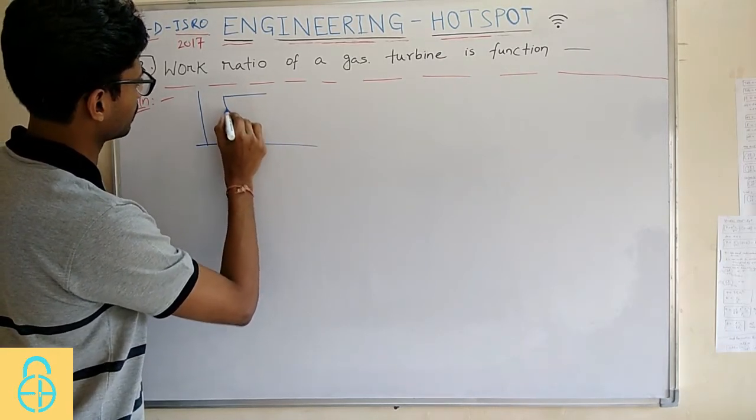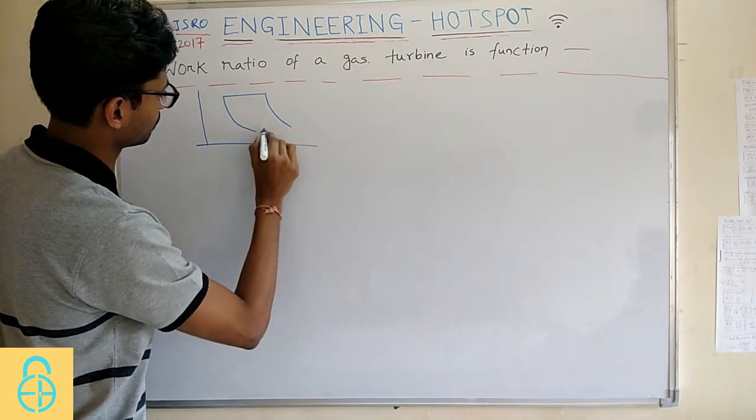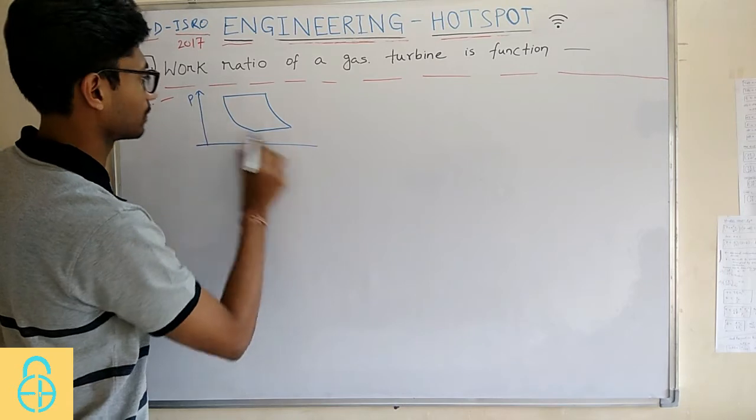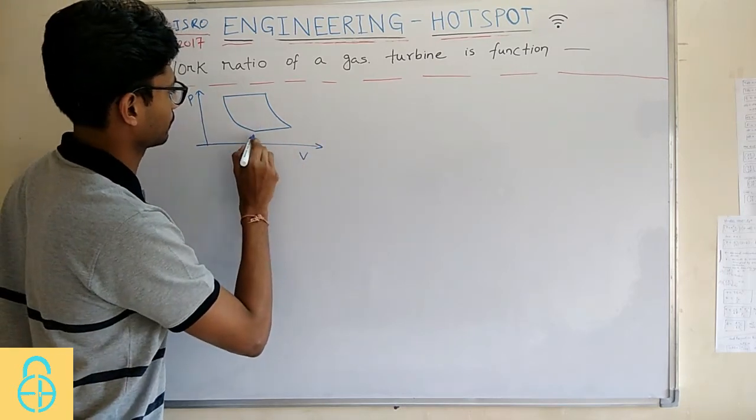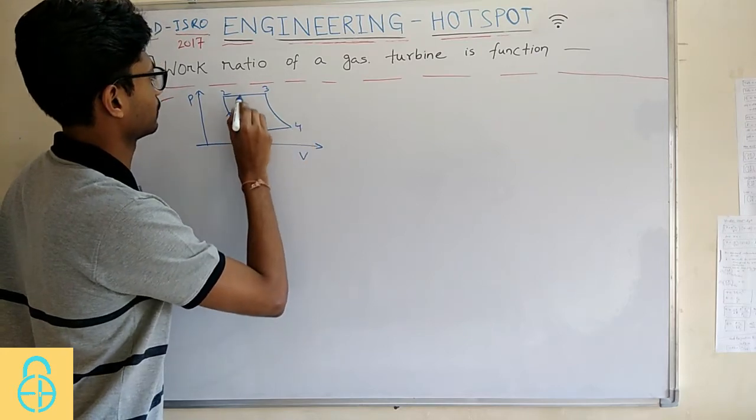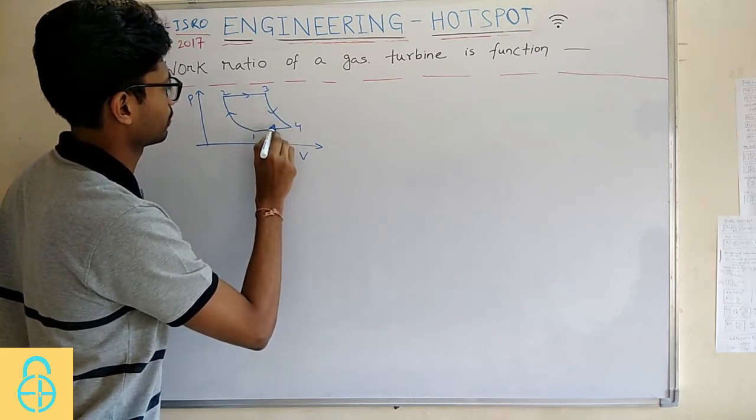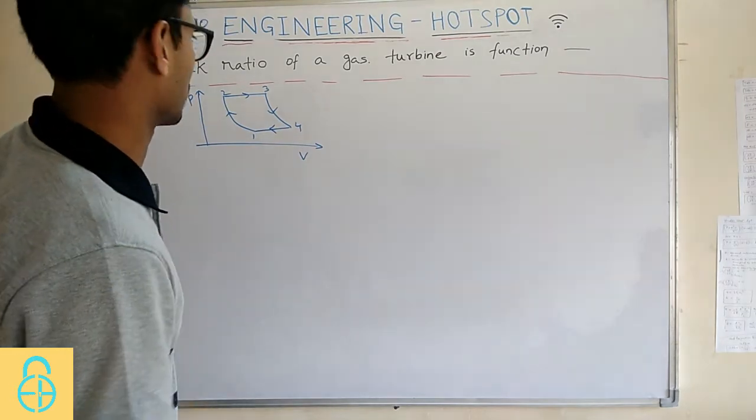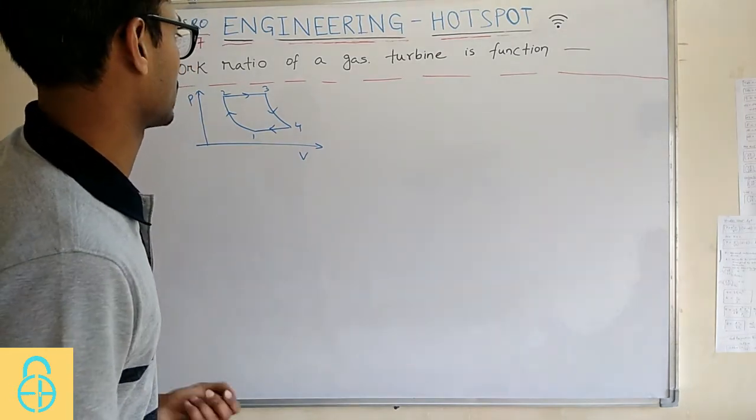First you have to draw the PV diagram of gas turbine. So it is a Brayton cycle, because the network is produced or may not be produced, it may be consumed by the compressor.